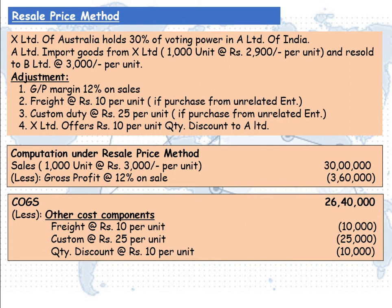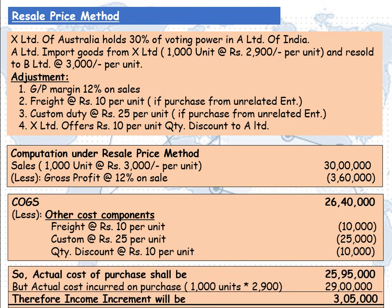We then deduct the cost components given in the adjustments: freight at Rs 10 per unit, which is Rs 10,000; customs duty at Rs 25 per unit, that is Rs 25,000; and the quantity discount offered by X Limited at Rs 10 per unit, that is Rs 10,000. Total adjustments come to Rs 45,000. Deducting from Rs 26,40,000, the actual cost of purchase shall be Rs 25,95,000. But the actual cost taken in the books is Rs 29,00,000. Therefore, income will be incremented by Rs 3,05,000.